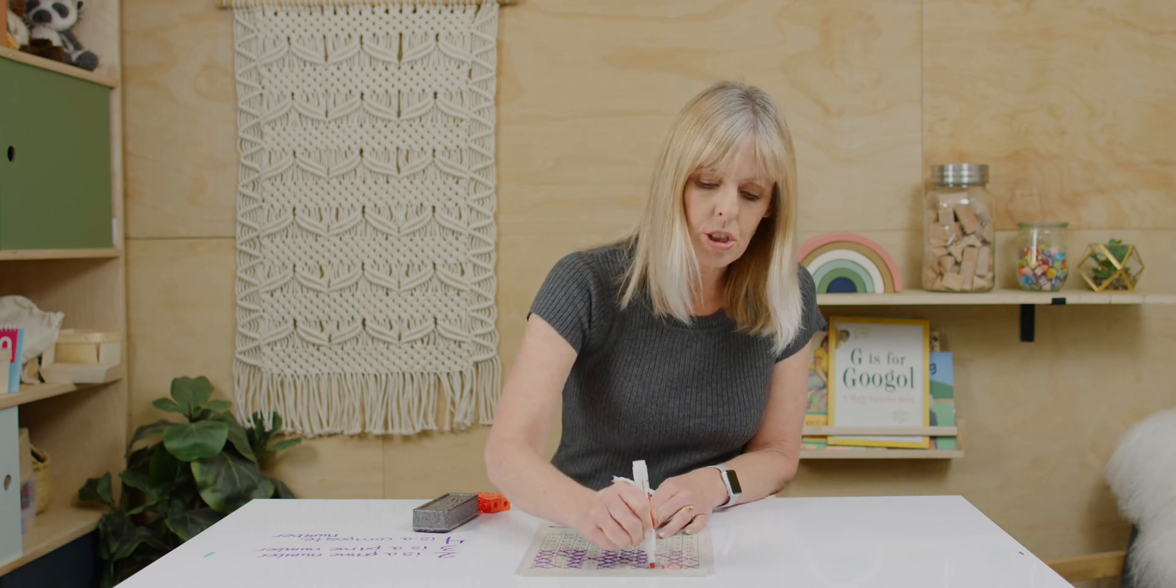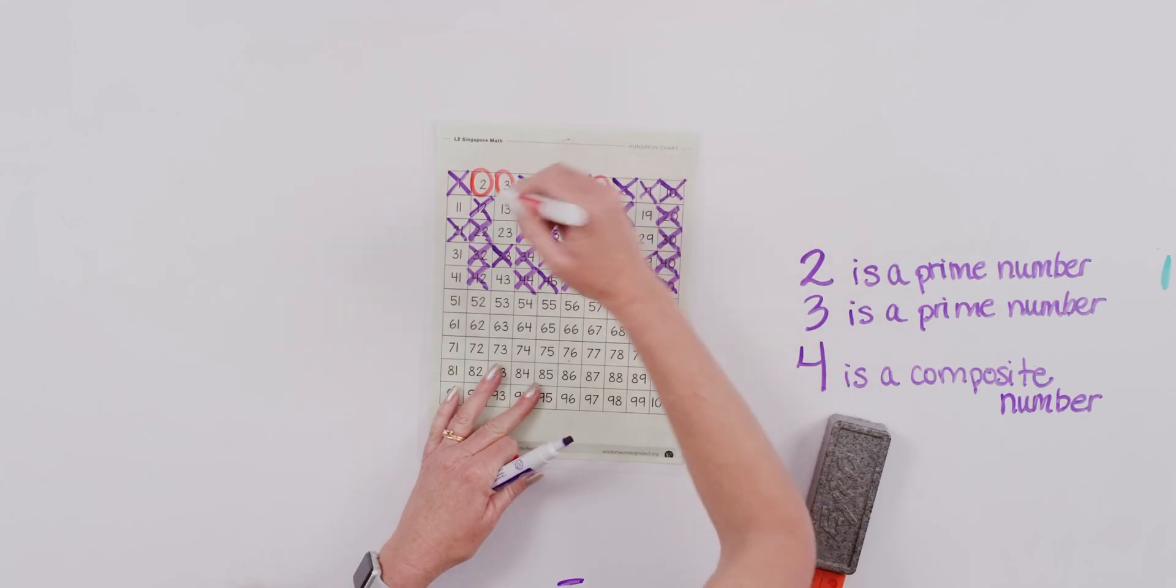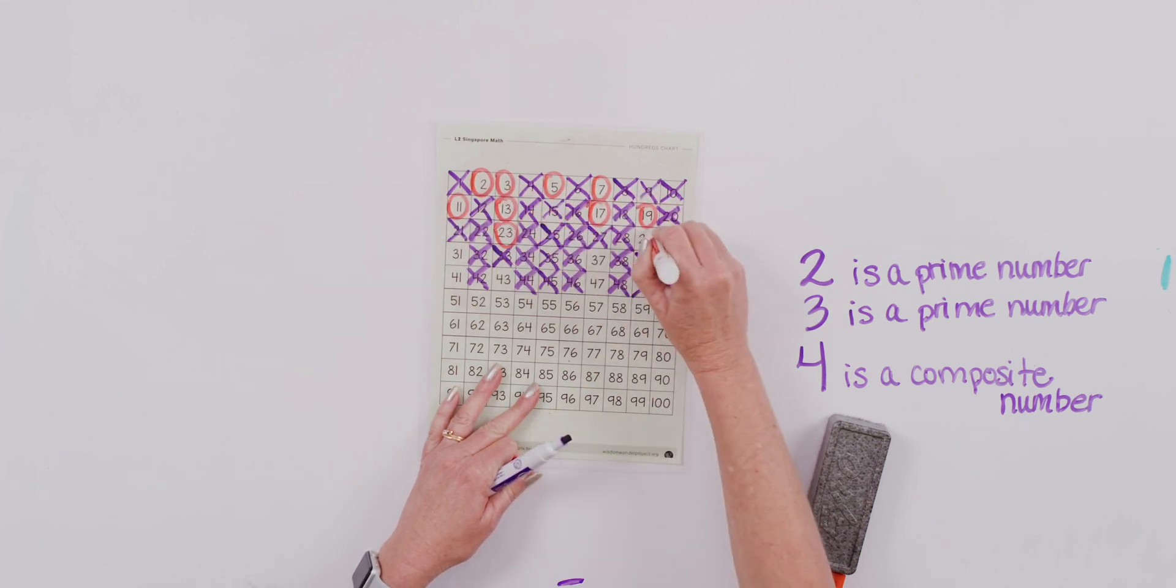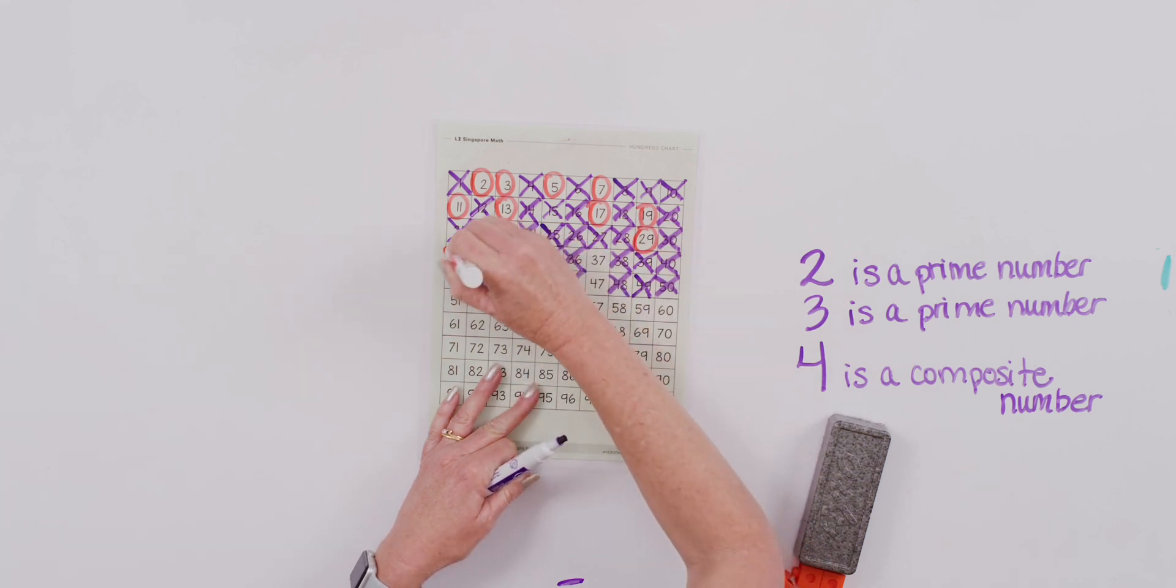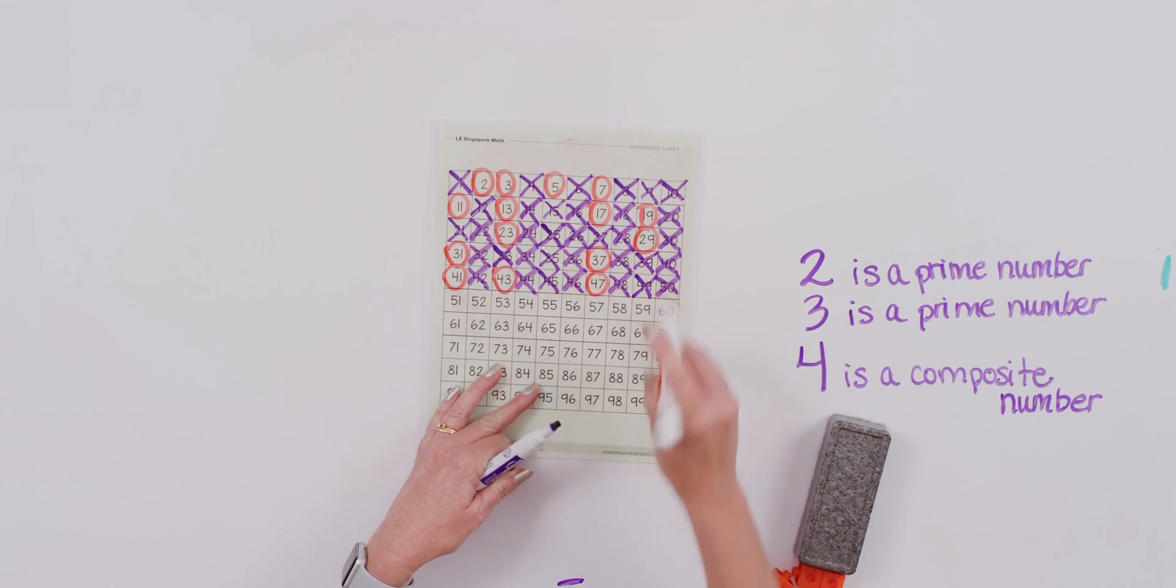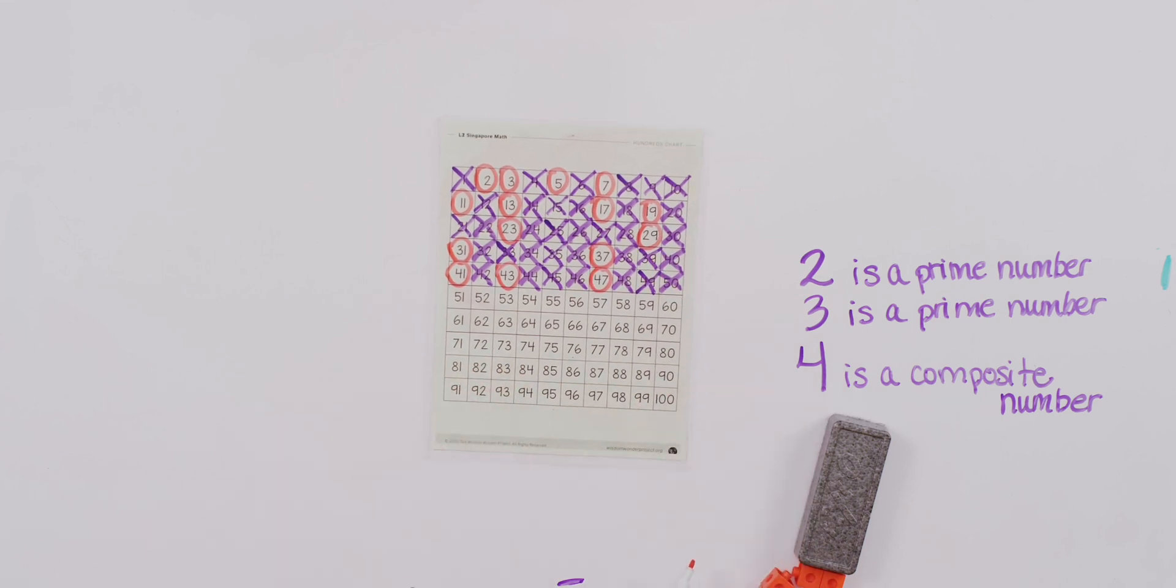So all these numbers I am circling only have two factors in them, and it's going to be 1 and itself. Now double check my work. Make sure I got them all. Do you see any mistake I made? Hopefully not. Hopefully we found all of our prime numbers here. Good job, you guys.